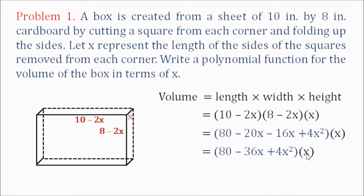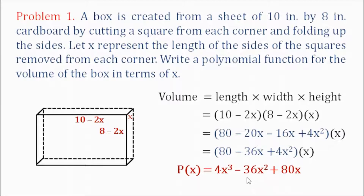We arrange our answer in descending order of the degrees. So we have p(x) equals 4x cubed minus 36x squared plus 80x. This is the polynomial function that describes the volume of the box in terms of x.